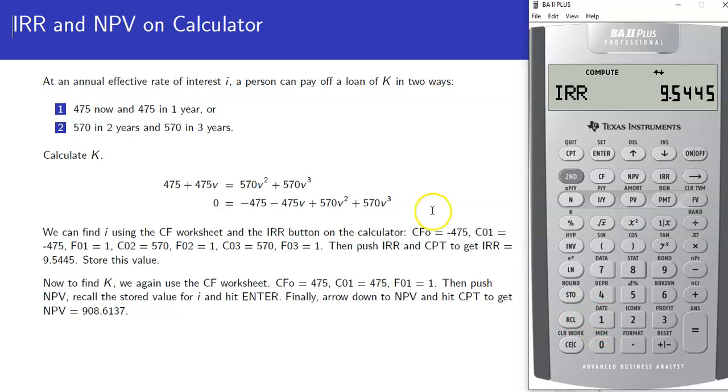This is the interest rate we should be able to use for each set of cash flows to move back to time zero and figure out the loan amount. Let's use our cash flow worksheet to do that because that's going to be the net present value in this case. Let's go back to the cash flow worksheet and clear it out.